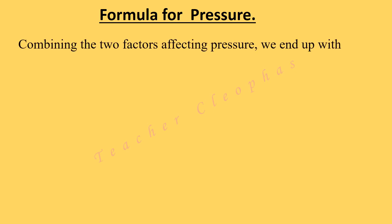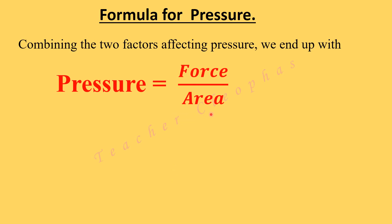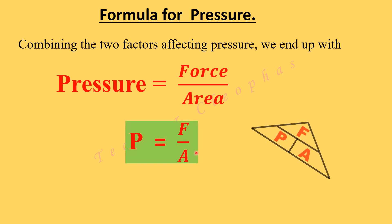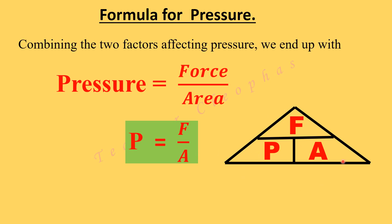Let's talk about the formula for pressure. Combining the two factors affecting pressure, we come up with: pressure equals force divided by area, written as P = F/A. We can use a triangle to summarize this formula. Pressure equals force divided by area. If F is the subject, then force equals pressure multiplied by area. And area equals force divided by pressure.